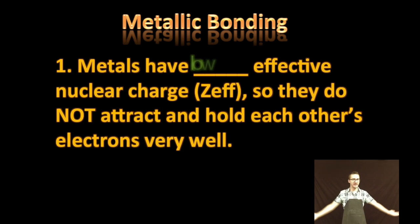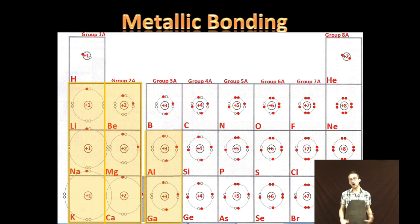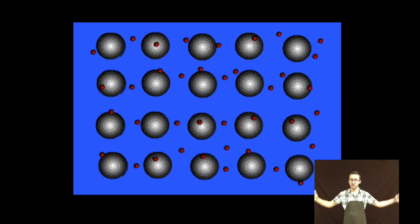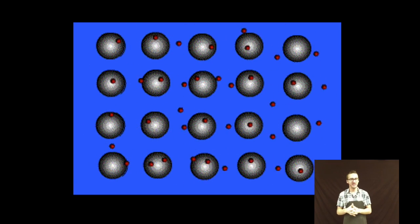Now why does this happen? Well, metals have very low effective nuclear charges, so they do not attract and hold each other's electrons very well. Take a look at your periodic table and recognize that your metal atoms will have effective core charges that are relatively low — plus one, plus two, plus three — not very attractive for those electrons. And so they just float about in the sea of electrons, not super attracted to any of those cores.